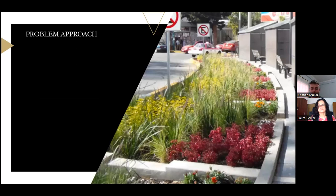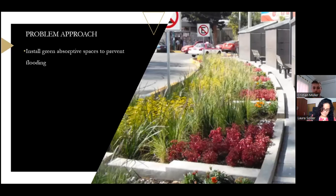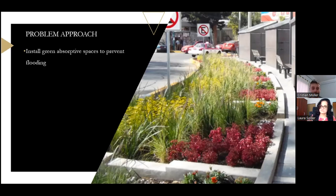Turning our attention to the problem approach and one of the proposed solutions: the proposal in this project is the creation of a green absorptive space. This consists of a landscaped area especially designed to absorb and retain rainwater. By providing a place where water can be absorbed into the ground rather than pooling on the street, the risk of fluvial flooding can be significantly reduced.